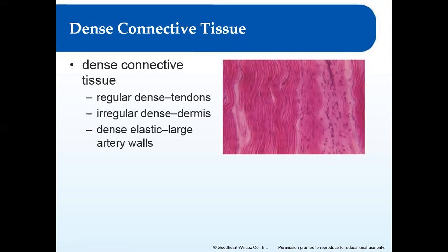As a result, irregular dense connective tissue resists stretching from a variety of directions, which is exactly what we need in our skin. Dense elastic connective tissue, as the name suggests, has an extracellular matrix full of elastic fibers — you can see a picture at the bottom of page 70. It's found in the walls of airways and large arteries that need to be able to stretch.